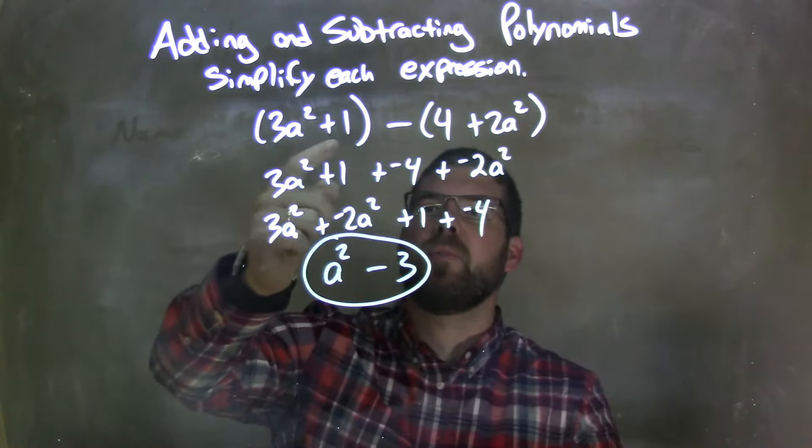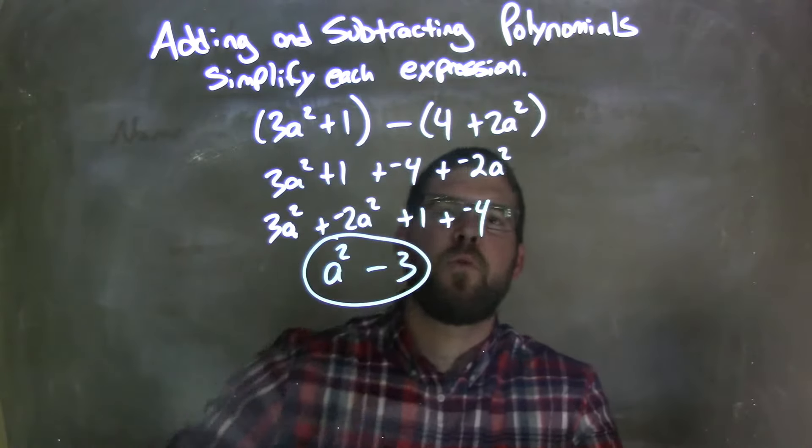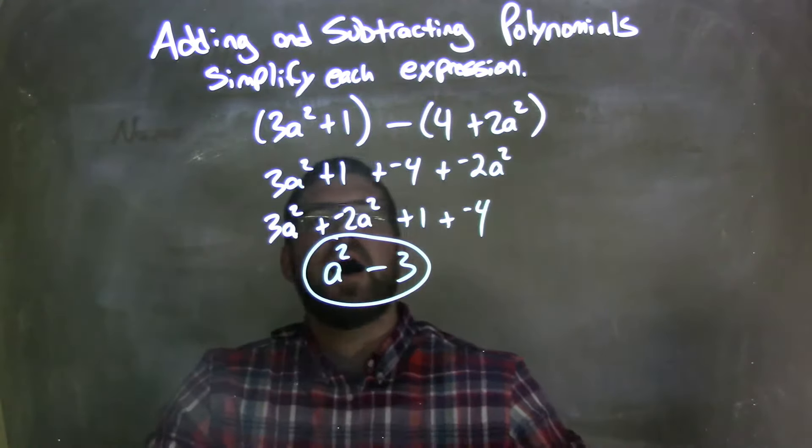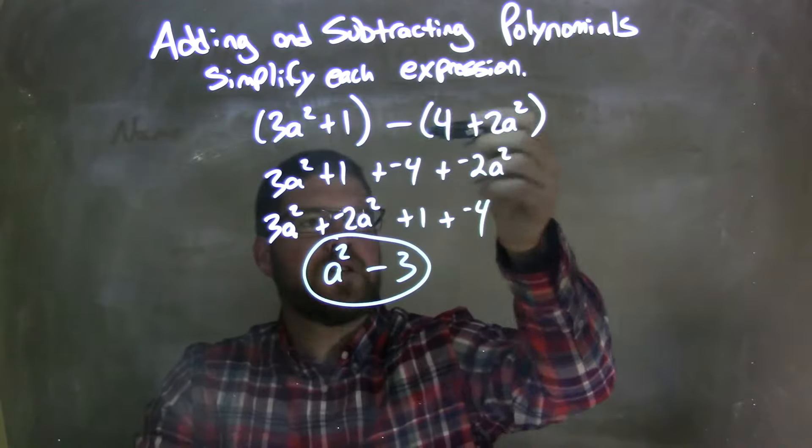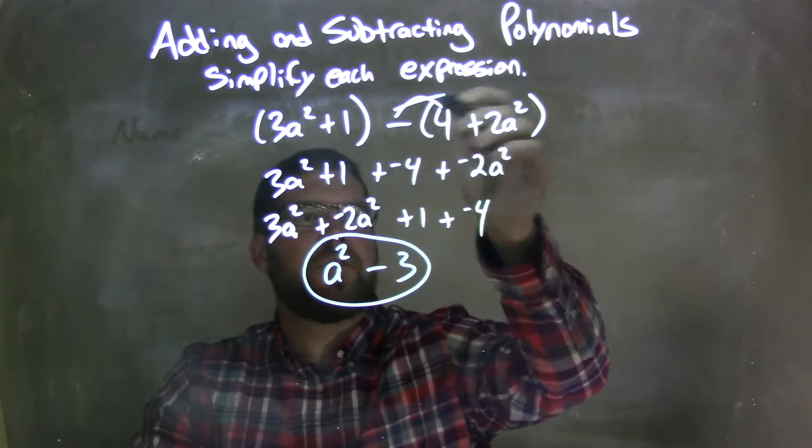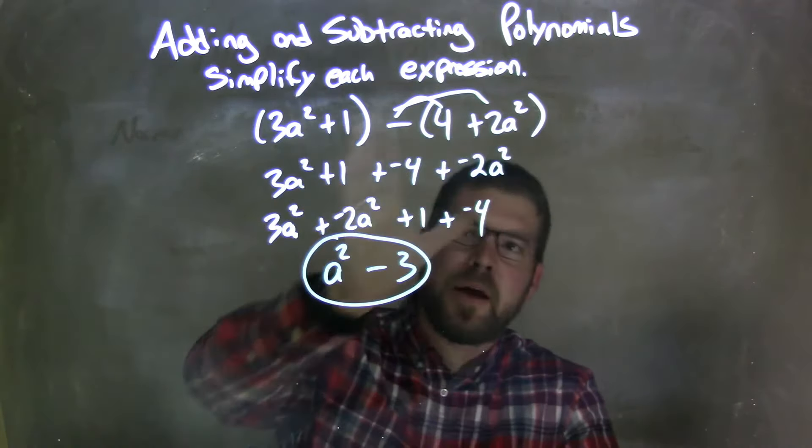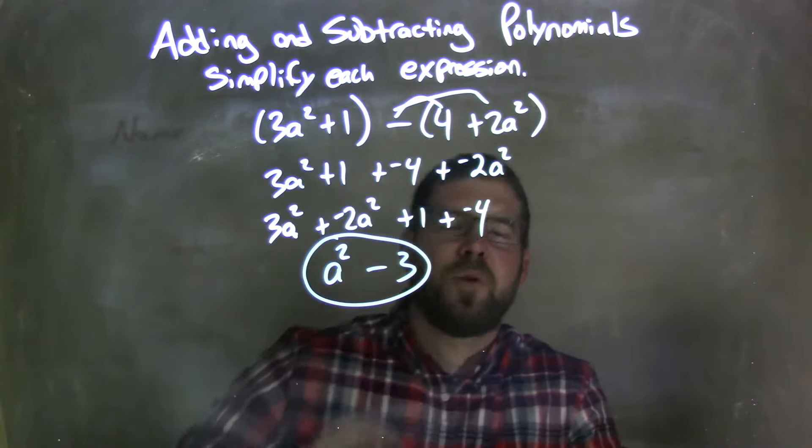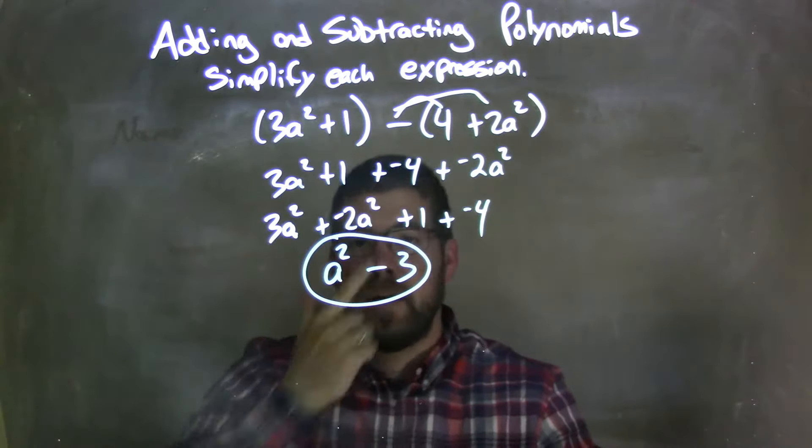So let's recap. We're given 3a squared plus 1 in parentheses, minus parentheses, 4 plus 2a squared. I distributed my subtraction across. Make sure you do that to both parts. We have plus a negative 4 plus a negative 2a squared, and I like to see it as plus a negative. I find it easier.